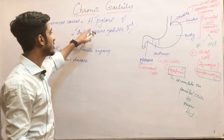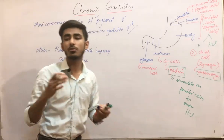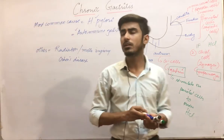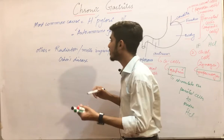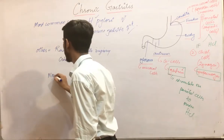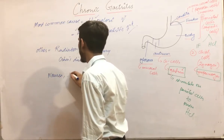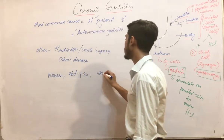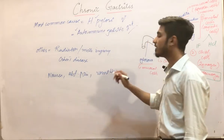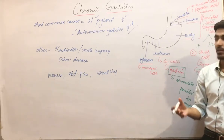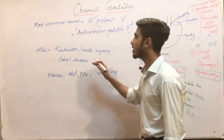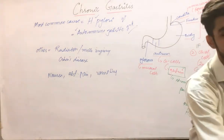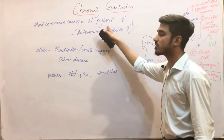We will be discussing these two because they are the most common. What are the symptoms of chronic gastritis? In all types of chronic gastritis, we have nausea, abdominal pain, and sometimes vomiting. But rarely we have hematemesis — hematemesis occurs only in rare conditions. This is a brief introduction to chronic gastritis.